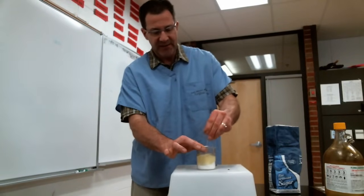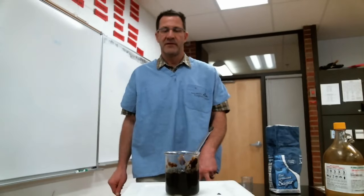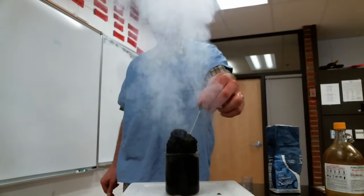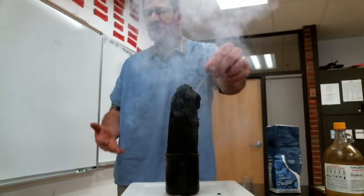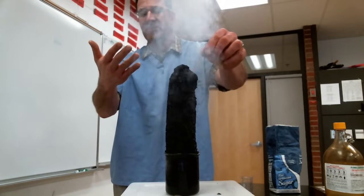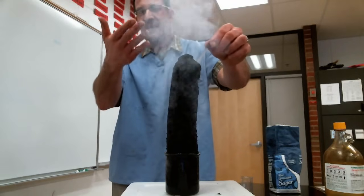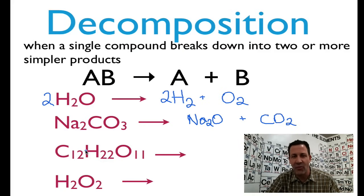You'll see pretty quickly it's going to start to change color. Get it all mixed up nicely and it's starting to react. That's the decomposition of sugar. The black stuff you see is carbon. The steam you see is mostly water. Of course there's a little bit of sulfuric acid in there, so you don't want to breathe it. But sugar will decompose into carbon — that's the black that you see — and most of the steam you see is water.